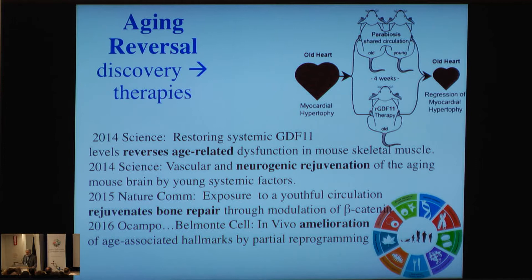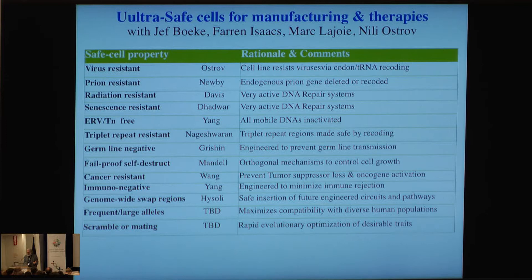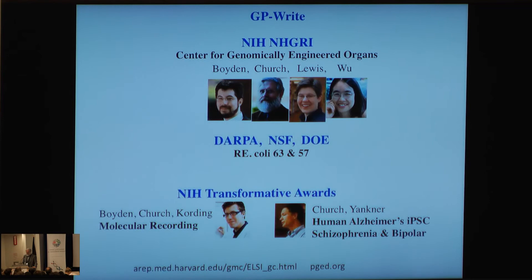You can complement that with a messenger RNA and extend it to a broader set of genes involved in aging reversal, which might be appropriately genome-wide. We want pathogen resistance, senescence resistance, and cancer resistance. There's a database maintained by my previous postdoc Pedro de Magalhães that includes 305 human aging-related genes. We're tackling these both in gene therapy form and at the cell and tissue level. I want to thank the people working on genomically engineered organs, which I consider a significant part of Genome Project-Write.